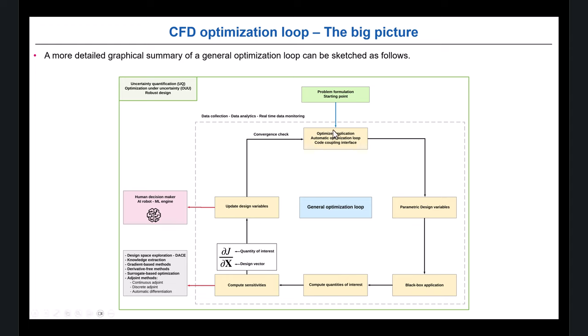After you have that information, you update your design variables. Here's where you can put some human decision-maker, or an AI robot, and keep iterating until you reach some level of convergence. You have a lot of data moving, so you need to collect data and do real-time monitoring because this loop needs to be fault-tolerant. If one case has a problem and everything stops, that is unacceptable. You need to control that — a power failure could lose everything. So you need to save data, gradient information, and iteration information.